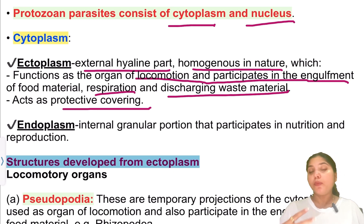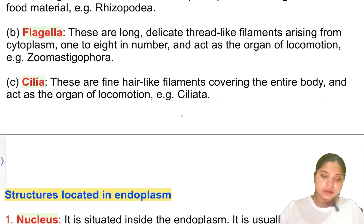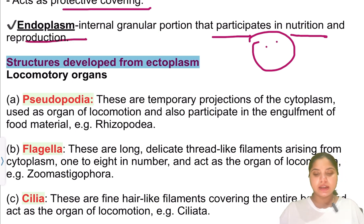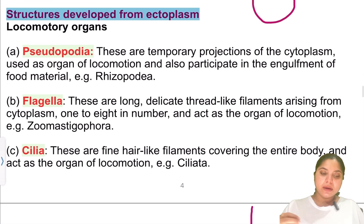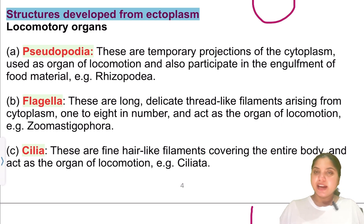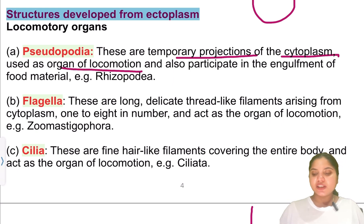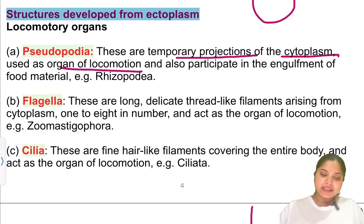Endoplasm is the internal granular portion, which participates in nutrition and reproduction. Regarding locomotory organs of ectoplasm that help in movement: first is pseudopodia — these are temporary projections of cytoplasm used as organs of locomotion, and they also participate in engulfment of food material. The best example is Rhizopodia.